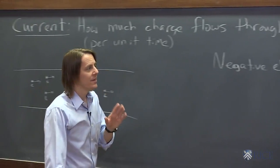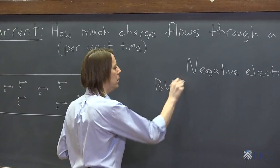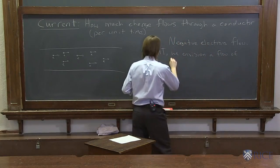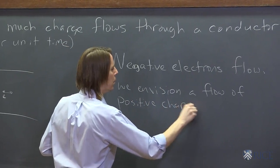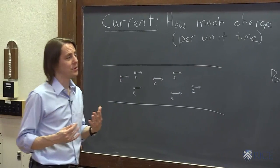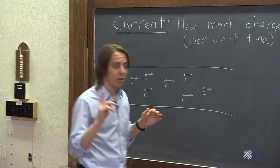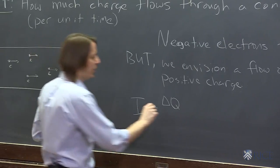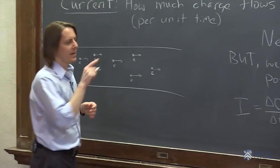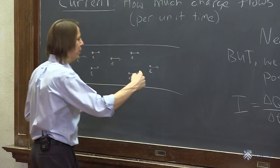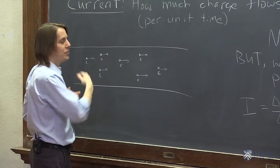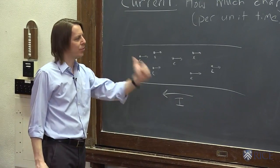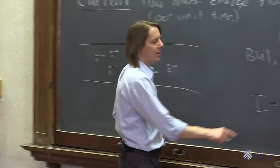In a conducting wire, it's actually negative charge — electrons — that flow. But this is the confusing thing: when we talk about current, which we define with the symbol I, we define current as how much charge, delta Q, flows in a certain amount of time, delta t — and that is positive charge by definition. So we define current as the flow opposite to the electrons. You can pretend there are little positive charges moving the other way. The current goes opposite the direction of electron flow, because we define current as positive charge per unit time.